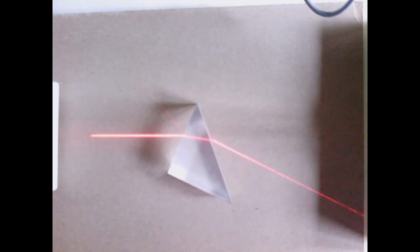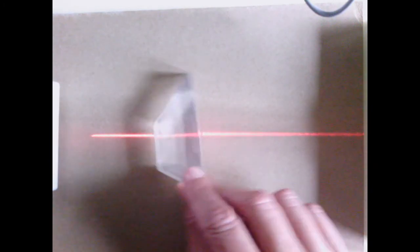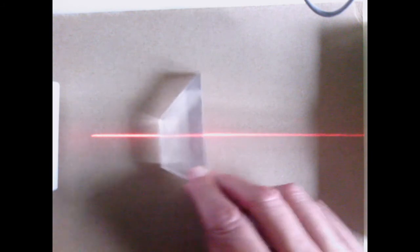And the fact that these two sides are not parallel means that we've actually redirected the light. If we have two sides that are parallel, it bends, it bends again, but it continues on in the same direction if the two sides are parallel.